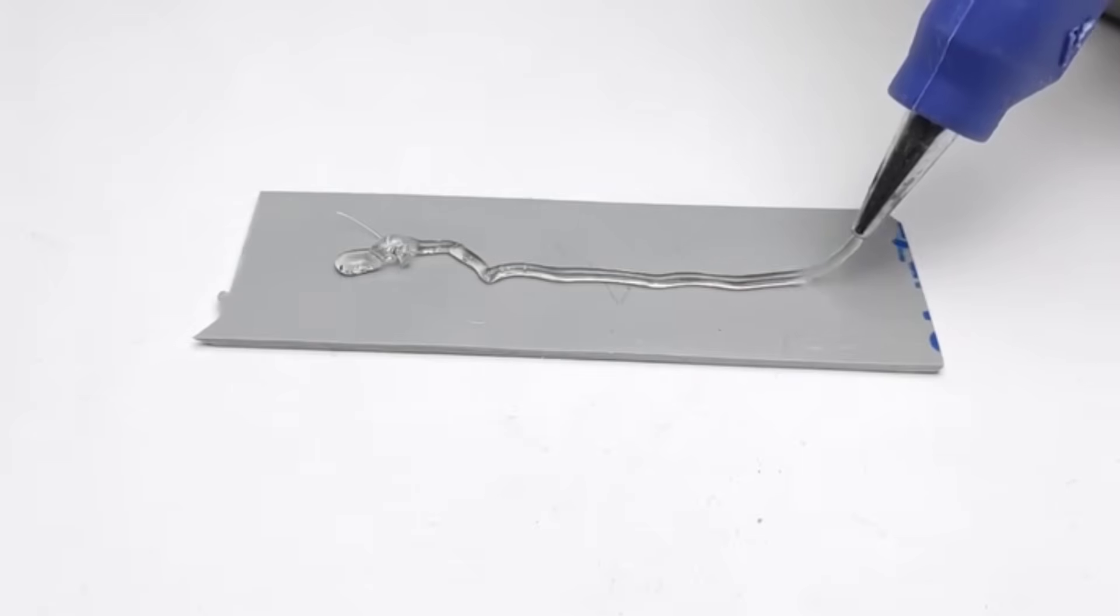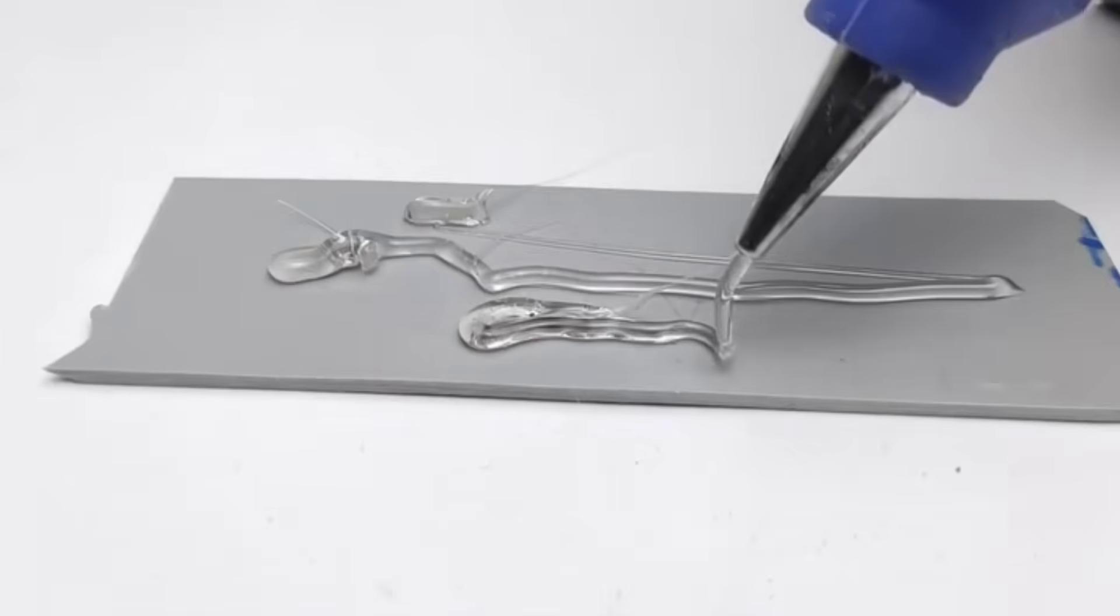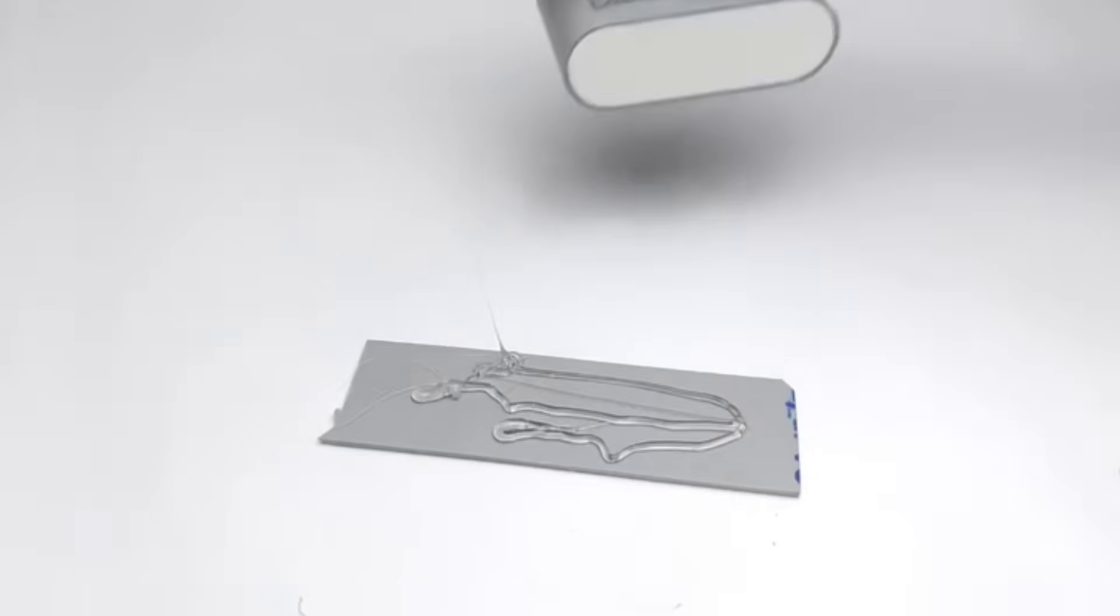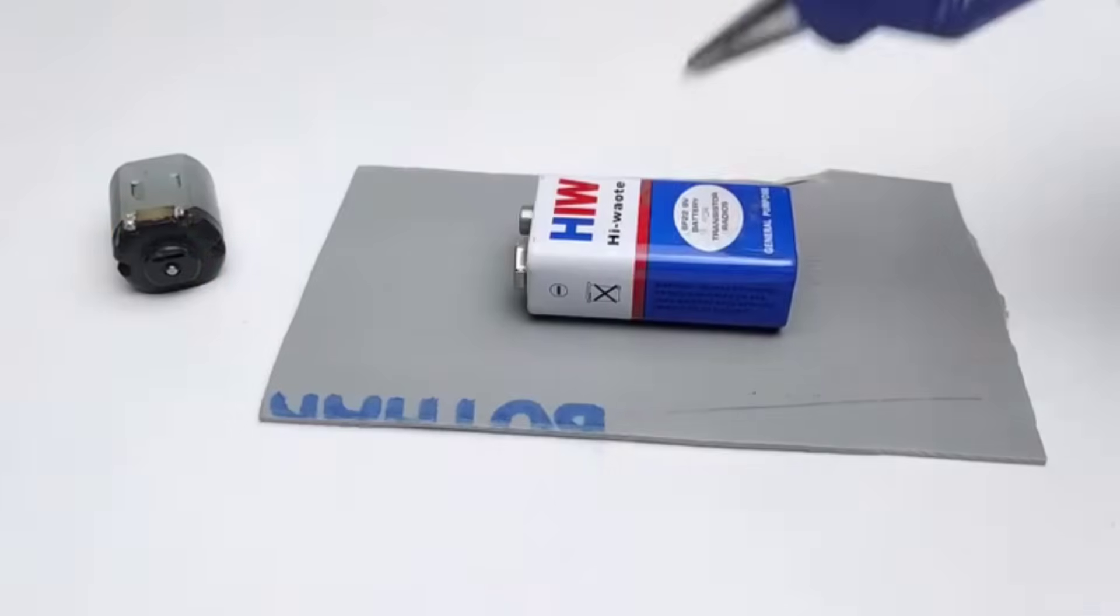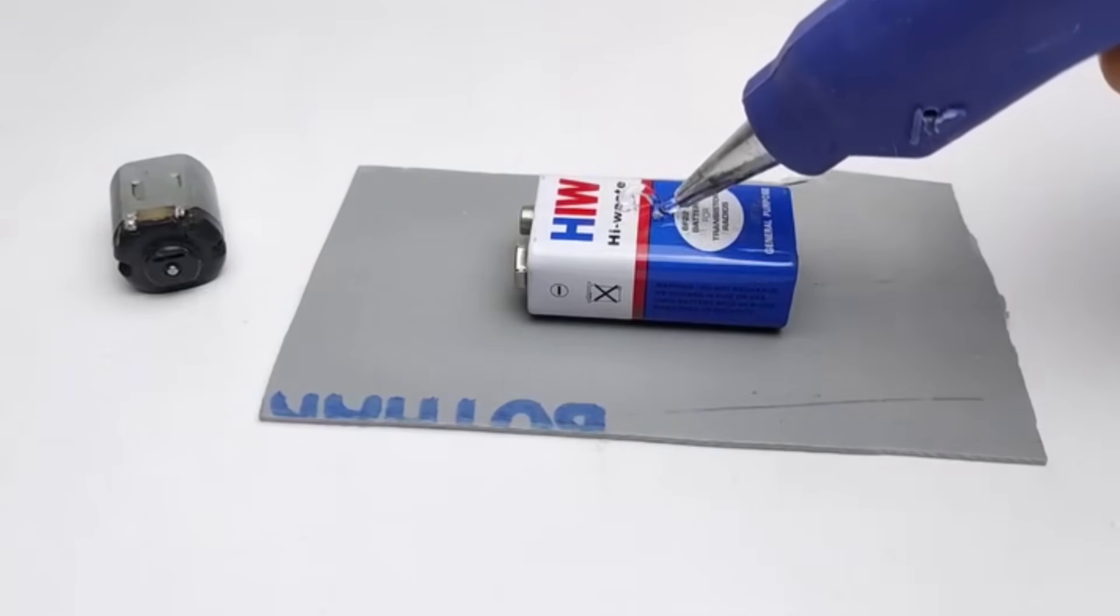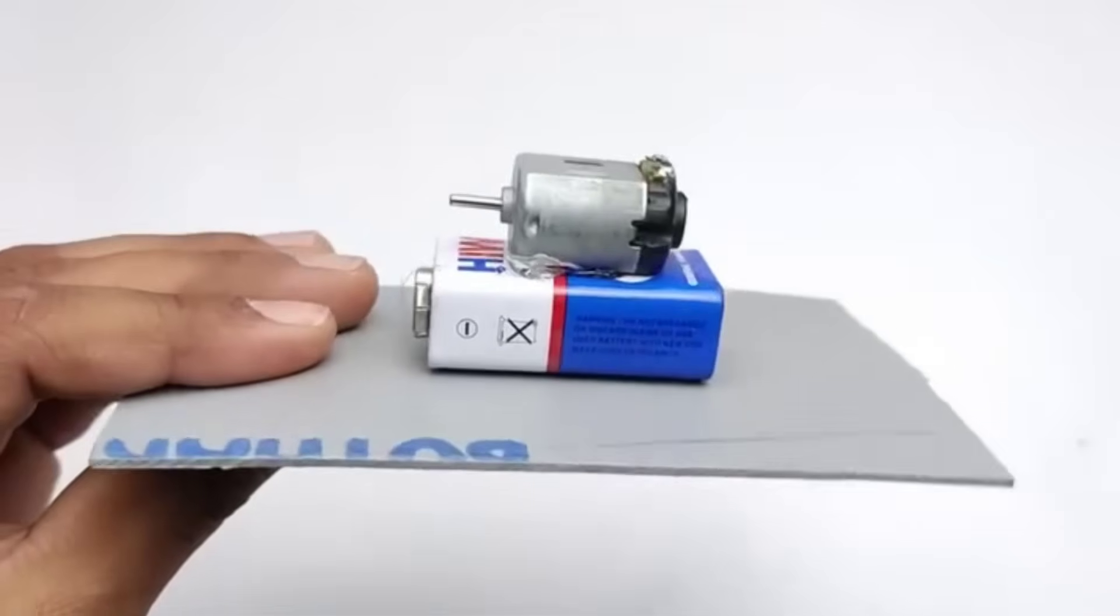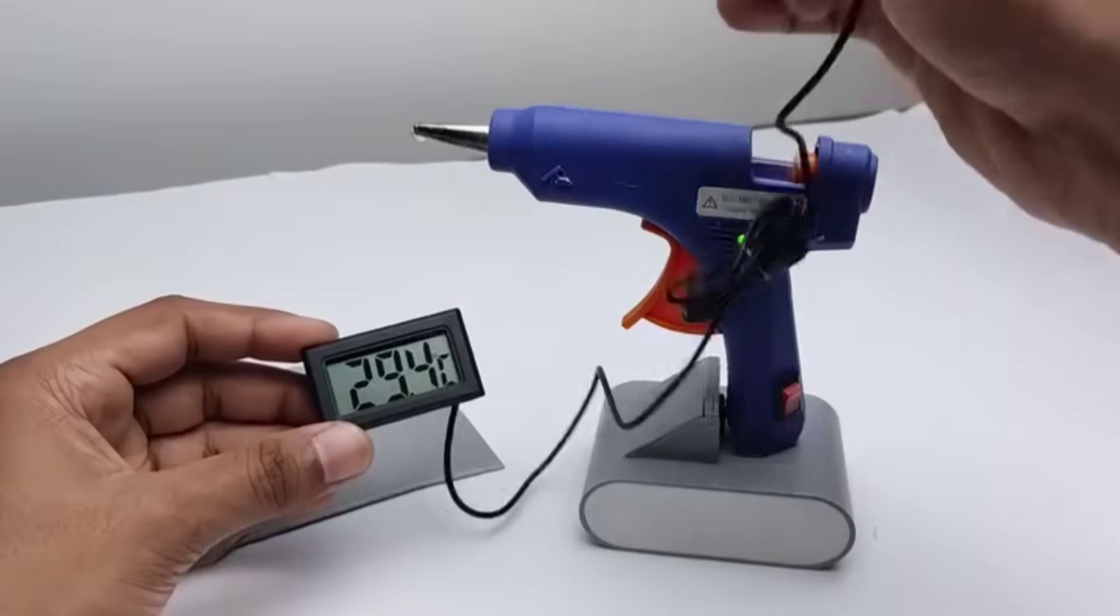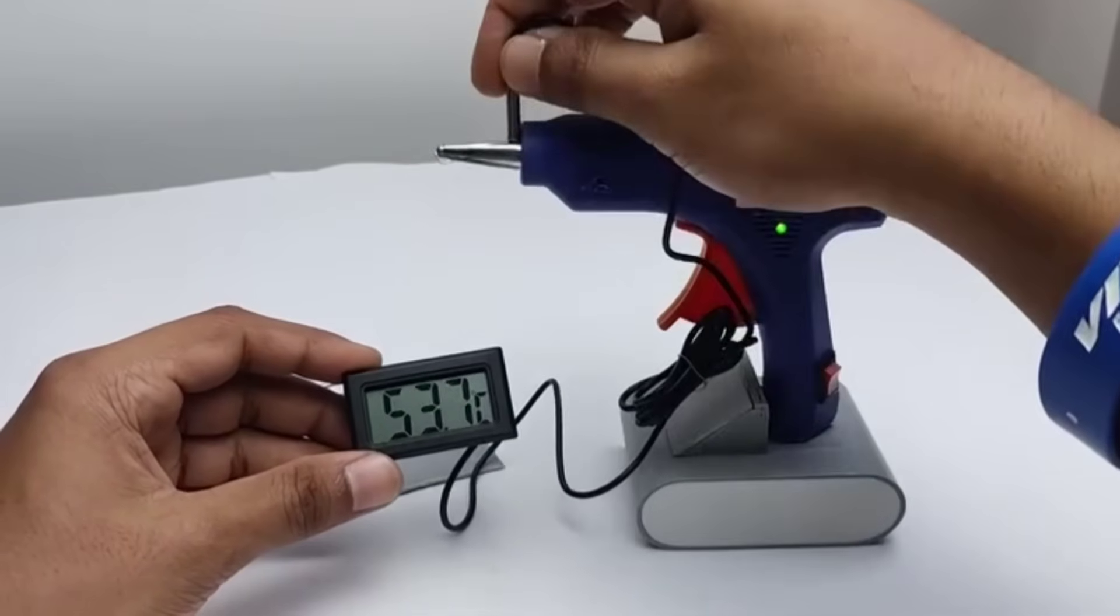The glue is coming out very smoothly and consistently, which shows that the glue gun is working perfectly. The reason it functions so well is that it runs on DC current, which provides stable power to the heating element. This allows the glue to melt evenly and flow precisely onto surfaces, making it ideal for joining different materials. You can also see the temperature clearly using the temperature meter, which helps us monitor how hot the glue gun is getting.